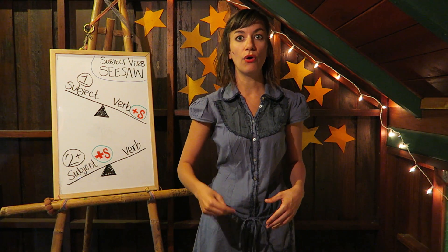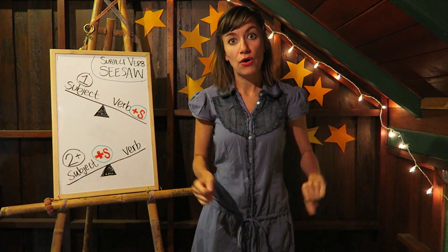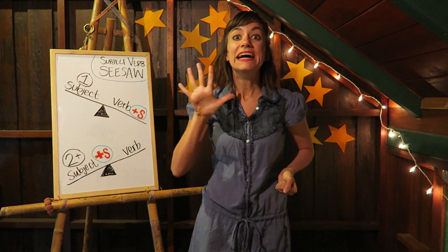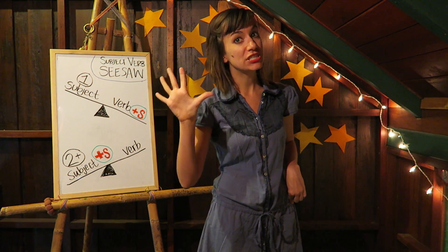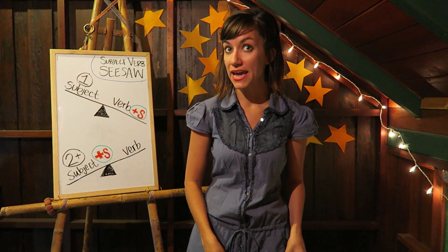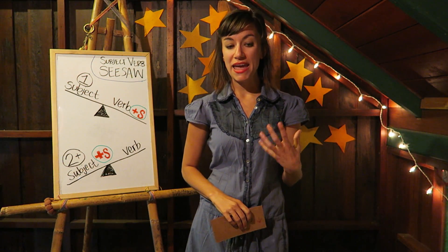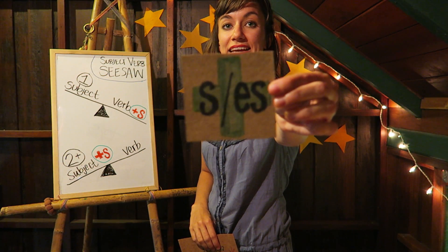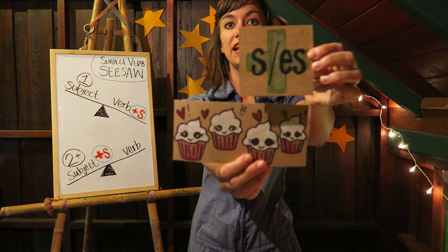A plural subject is more than one — two, five, ten, fifty, or a thousand. A cat becomes cats, a book becomes books, a teacher becomes teachers, a cupcake becomes cupcakes. To make a subject plural, you add an S or ES. Plural subjects have an S or ES.